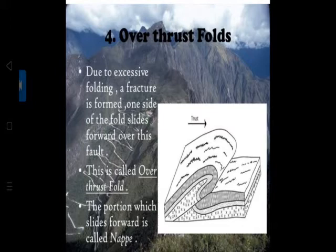Over thrust fold - due to excessive folding, a fracture is formed. One side of the fold slides forward over the other fold - this is called an over thrust fold. The portion which slides forward is called a nappe. This is extra information beyond your types of folds.